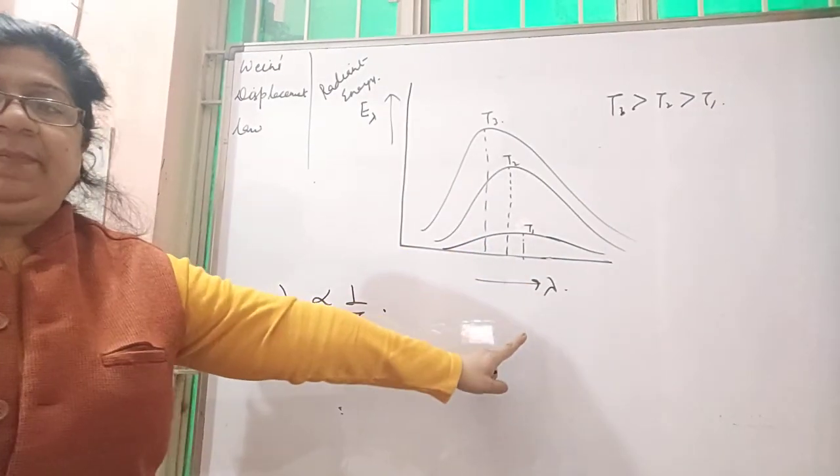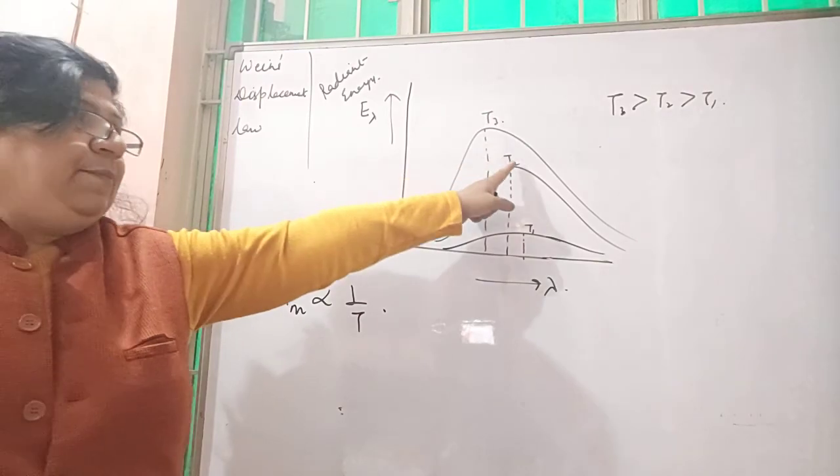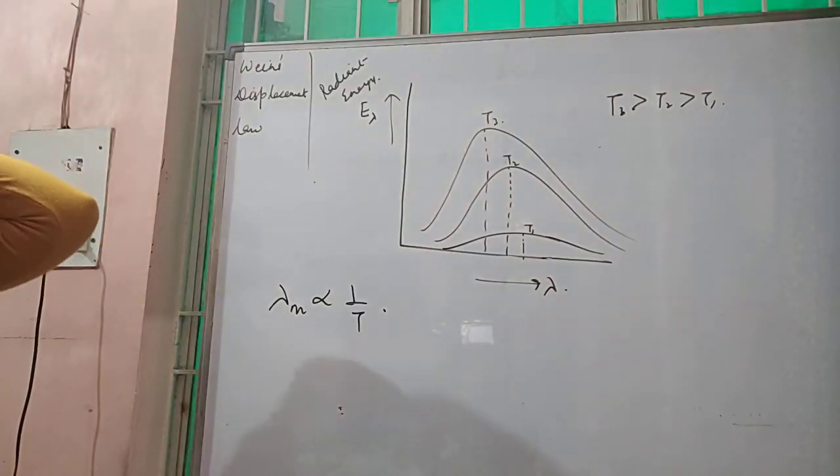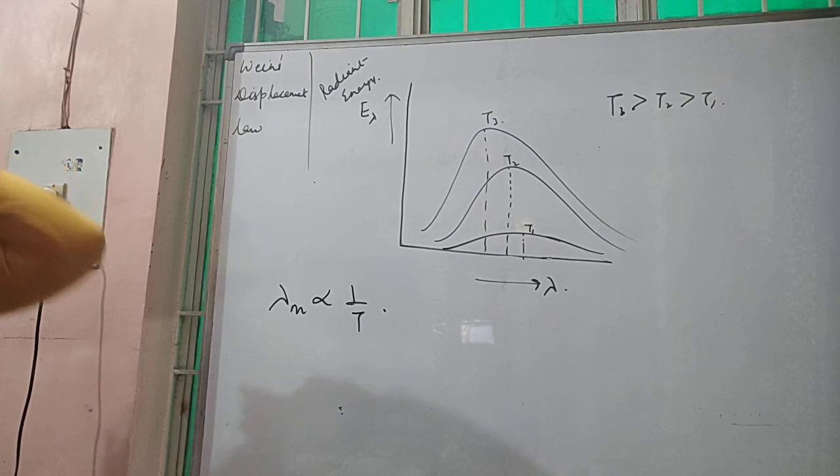Yaha pe iski wavelength maximum hai, the temperature will be the lowest one. As the temperature rises, this peak is shifting towards the shorter wavelength. So this diagram is very important.